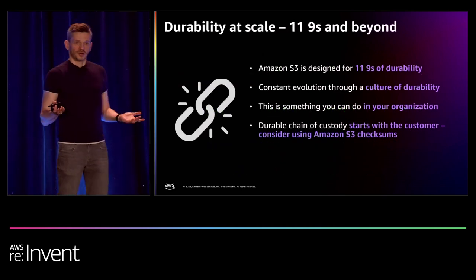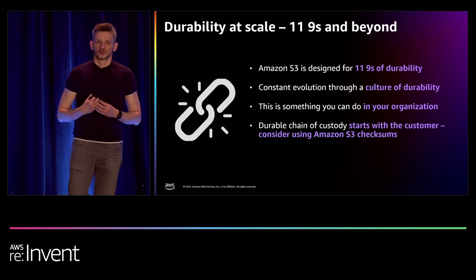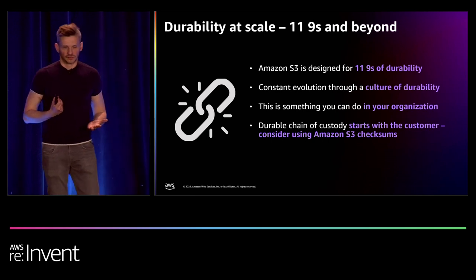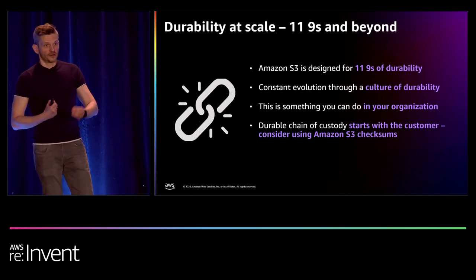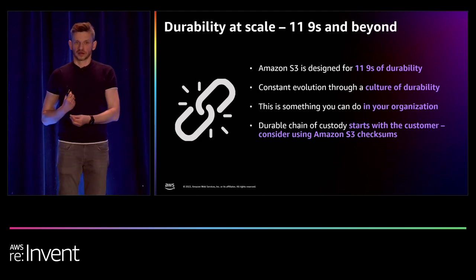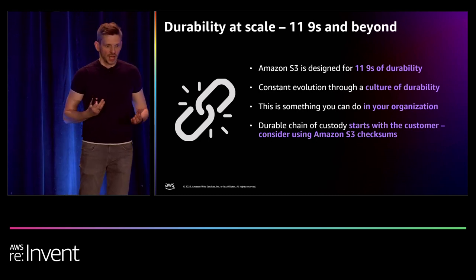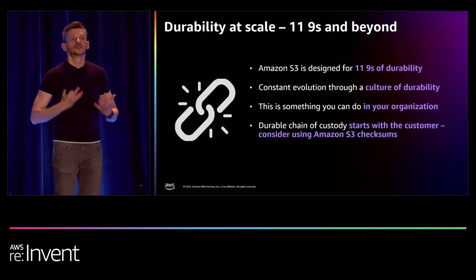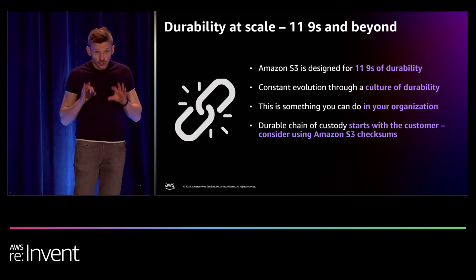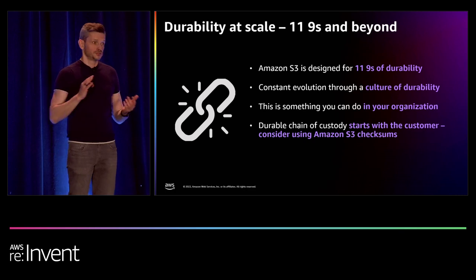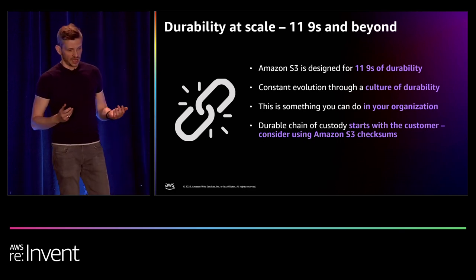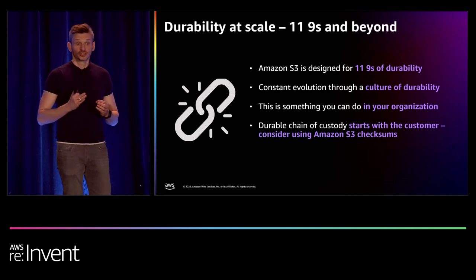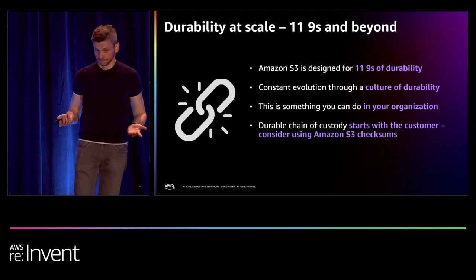If you start using checksums — which is relatively easy, and SDKs enable it very simply — you'll participate in a durable chain of custody and have assurances that your object is never altered, even traveling across the wide expanses of the internet. To summarize: Amazon S3 is designed for 11-nine durability, which is a function of data decay, AFR, and repair effectiveness. Amazon S3 treats durability as an ongoing process — something done every day. Durable chain of custody actually starts with you, the customer. You can participate in that.